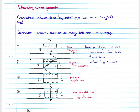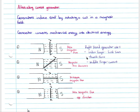Let's look at the way a generator works. We have a magnet with magnetic field lines and a coil rotating in a clockwise direction. When the normal to our coil is parallel to our magnetic field lines — that is, the angle is zero degrees — we have maximum magnetic flux. We use the right-hand generator rule to determine the direction of movement and the direction of our current.